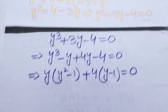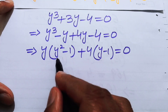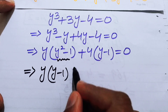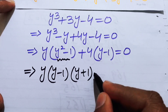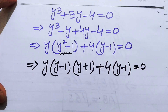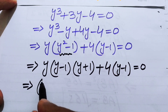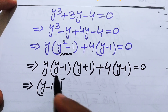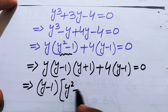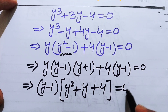We apply the difference of squares identity on (y squared minus 1), giving y(y minus 1)(y plus 1) plus 4(y minus 1) equals zero. Taking (y minus 1) as a common factor, we get (y minus 1)(y squared plus y plus 4) equals zero.